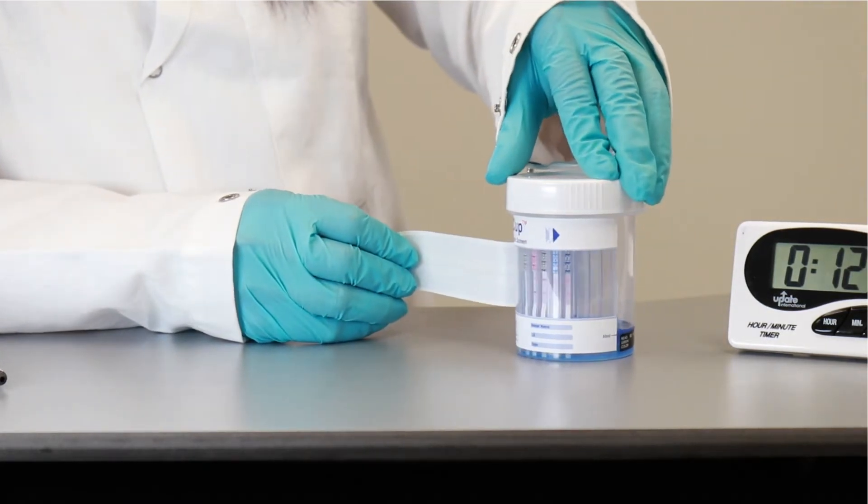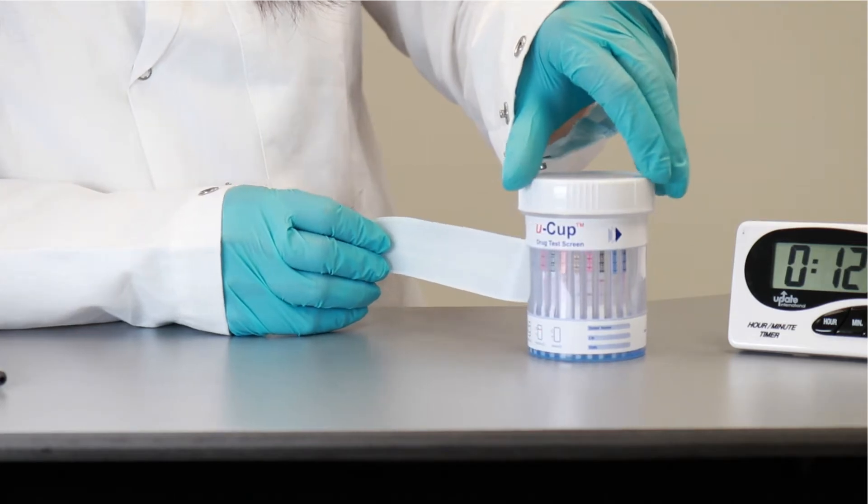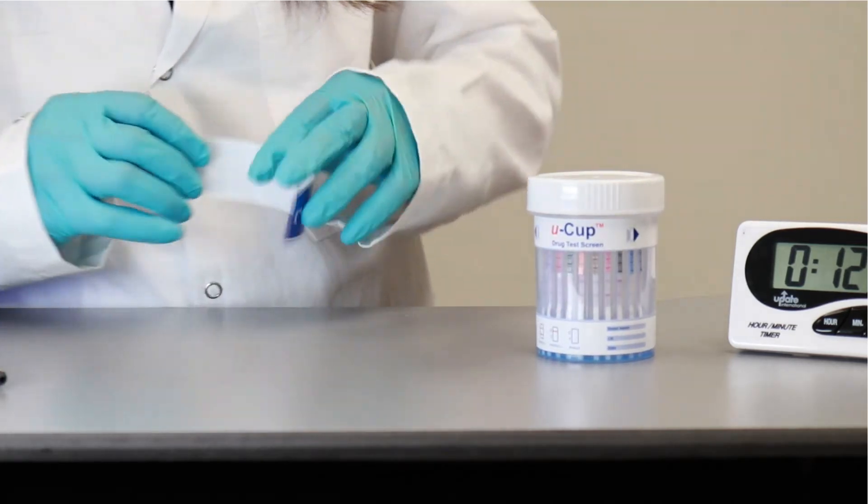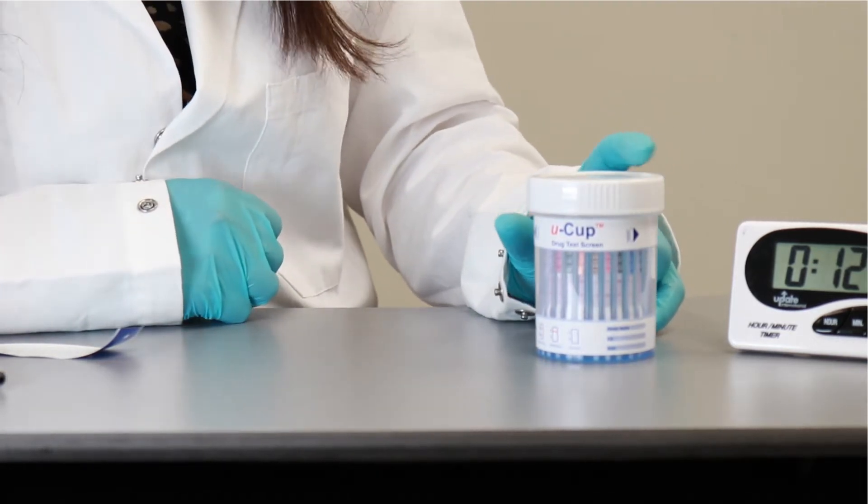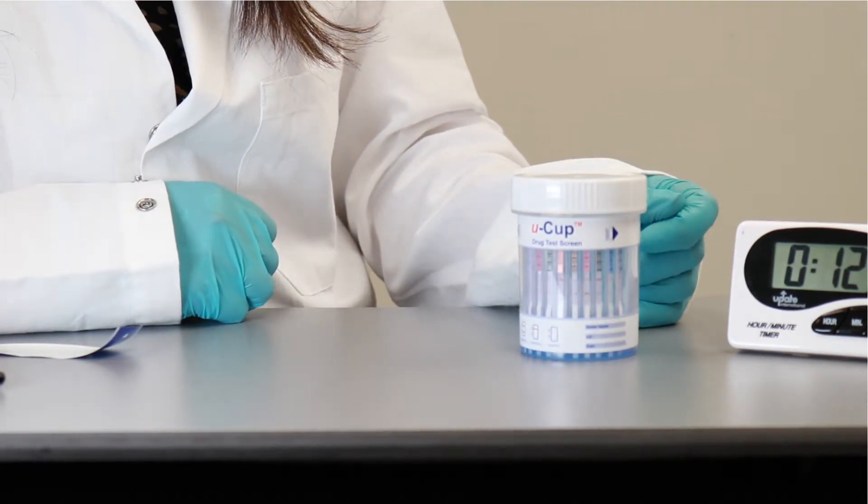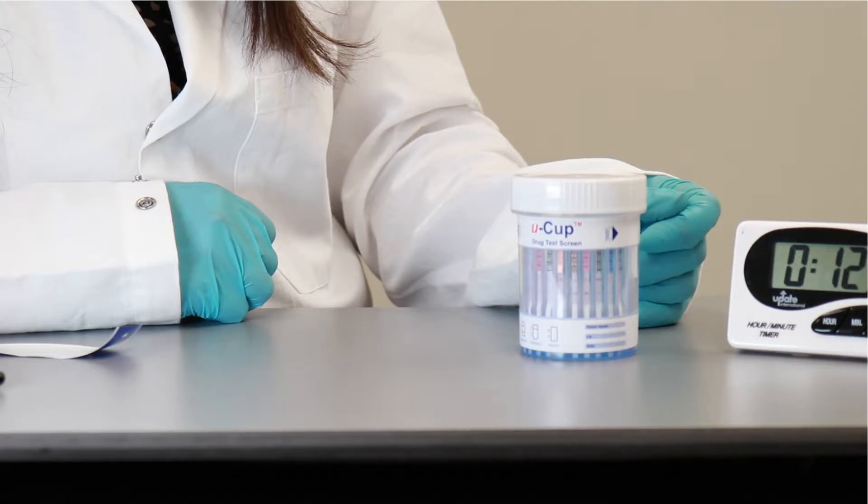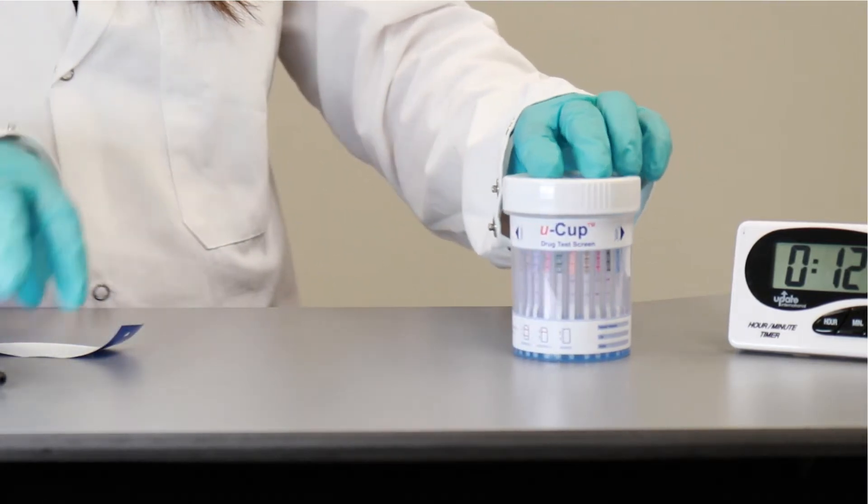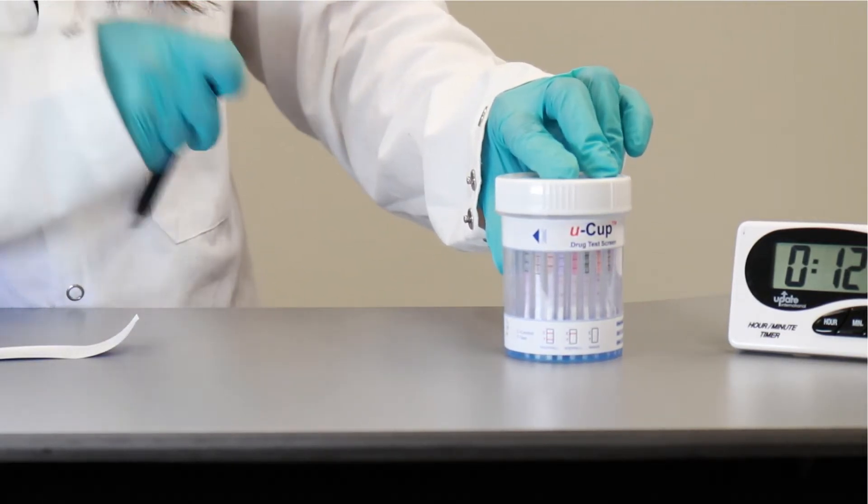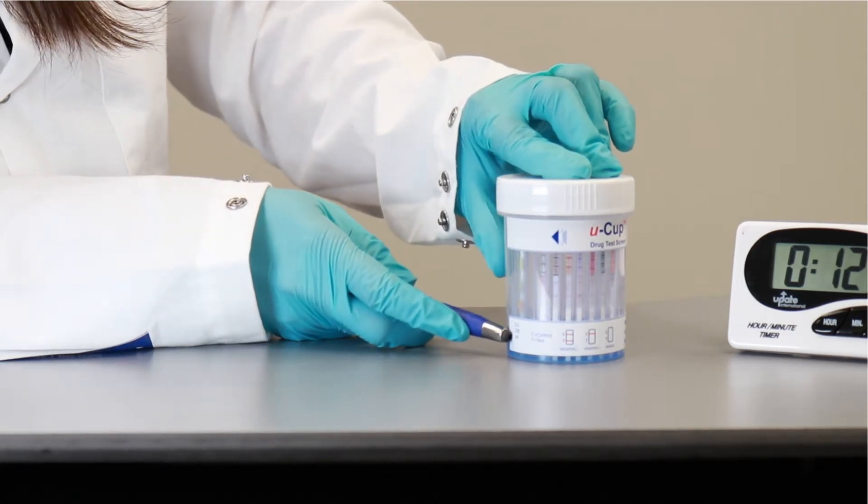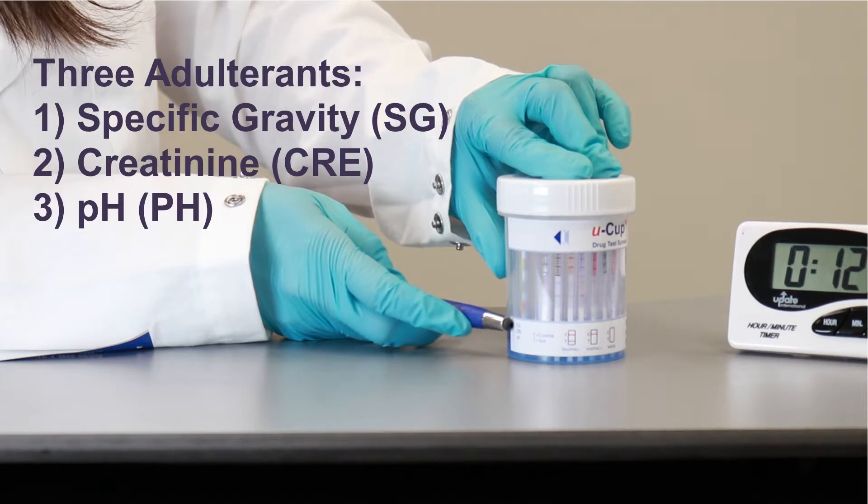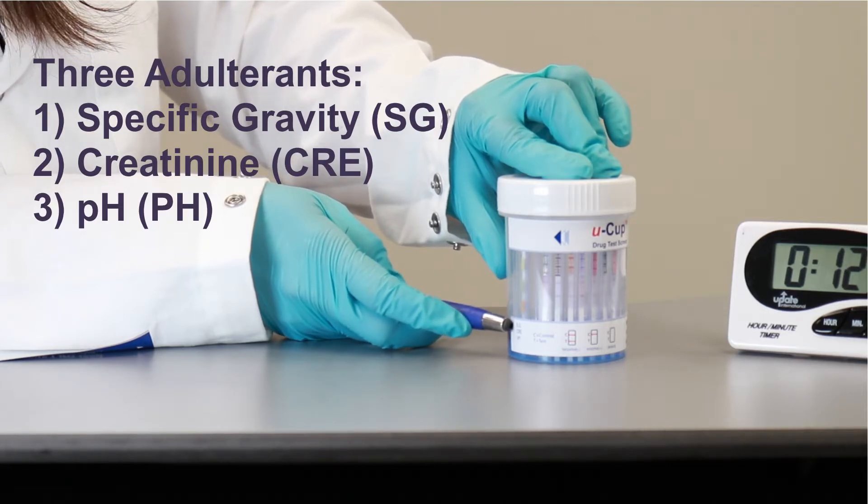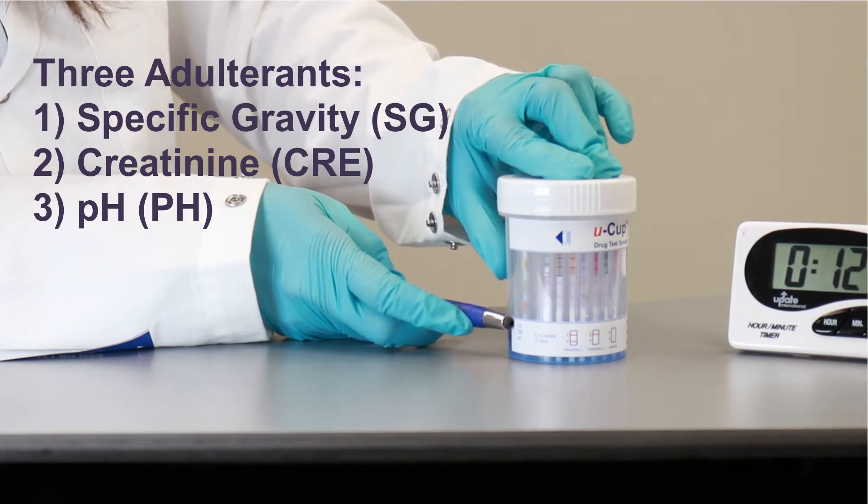So it's a very rapid test that goes really fast in case of negative drug panels. If it is positive, then you are supposed to wait up to 4 minutes to call the result positive. Right here, you have three adulterants on this particular cup. That's specific gravity to make sure that the urine has normal range of specific gravity.